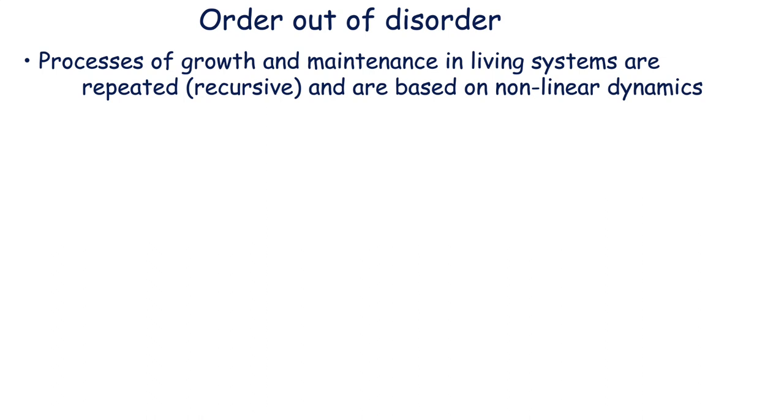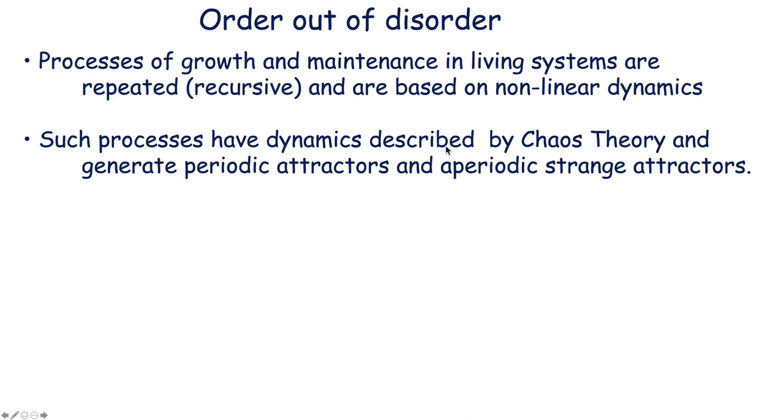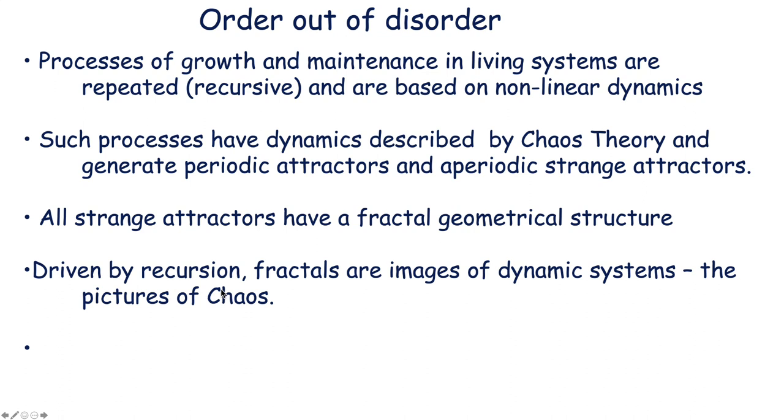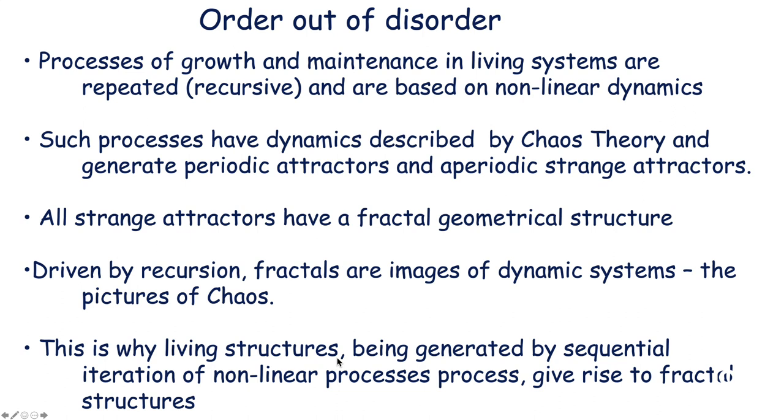How does order come out of disorder? In general, in living systems, in biology, processes of growth and maintenance are repeated, recursive, but are varied on these non-linear dynamics. These processes have dynamics described by chaos theory and generate patterns of periodic attractors and aperiodic strange attractors, this mixture between order and disorder. All strange attractors have a fractal geometrical structure. I mentioned before a relation between non-linear dynamics of chaos and the fractal geometry of nature. Driven by recursive processes, fractals are imagining images of dynamic systems, the picture of chaos. This is why living structures, being generated by sequential iteration of non-linear processes, give rise to fractal structures.